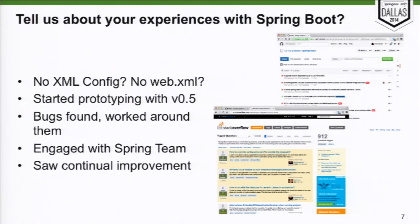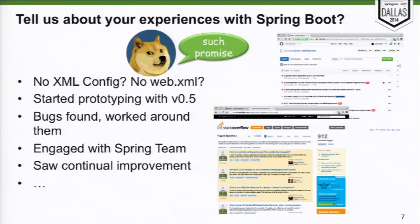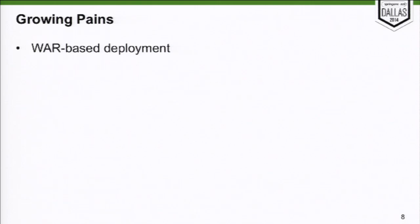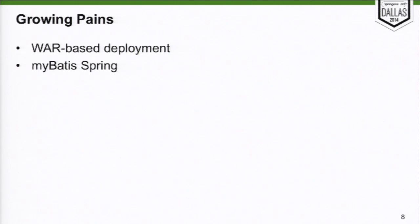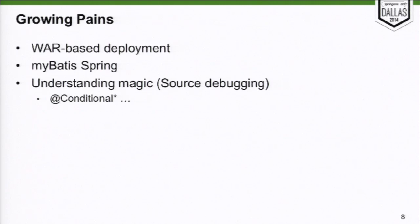We kept seeing things get better and better, and started taking out more and more of our hacks and workarounds. But it wasn't without its problems — we had some growing pains. One was that we needed to deploy as a WAR, and if you've heard all the talks about Boot, it's geared towards jar-based deployment. We pushed on it, and the bugs and configuration issues were fixed. We initially wanted to give MyBatis Spring a shot, but it just would not wire up properly, so we had to abandon that and use JPA with Hibernate — which works great.